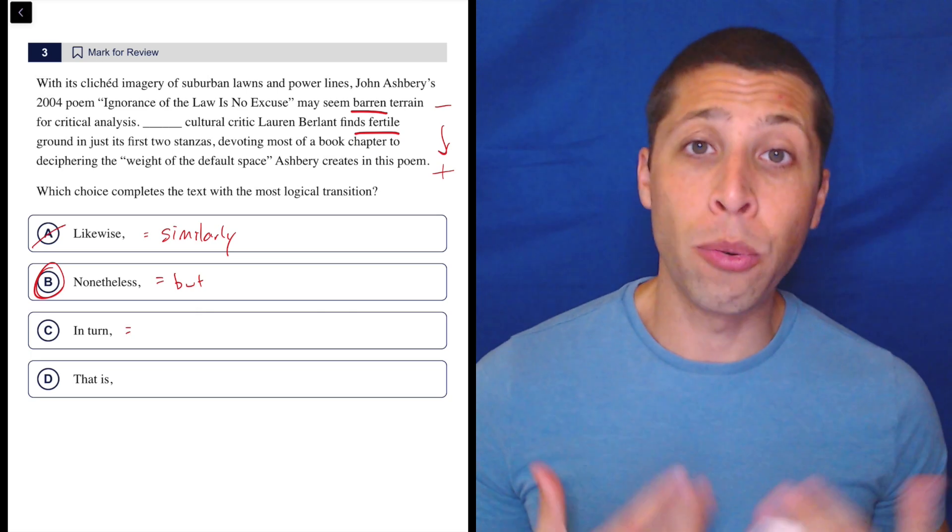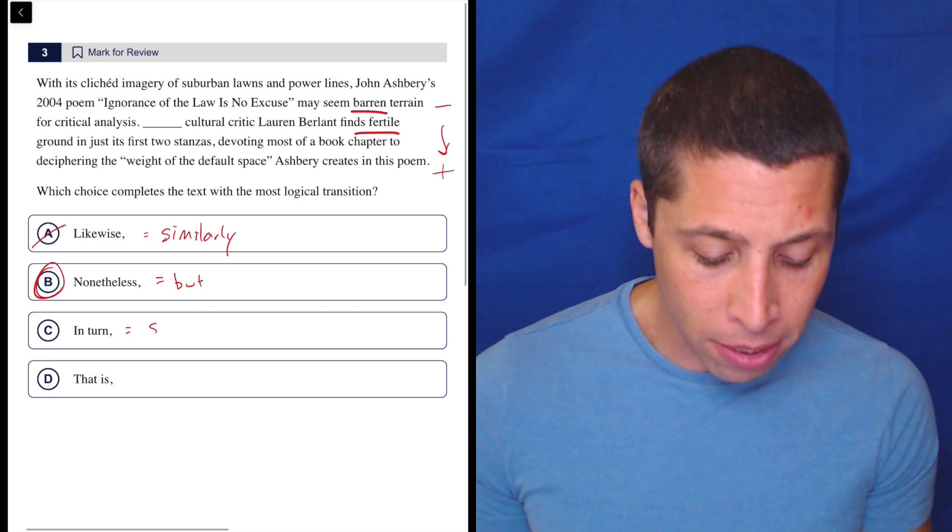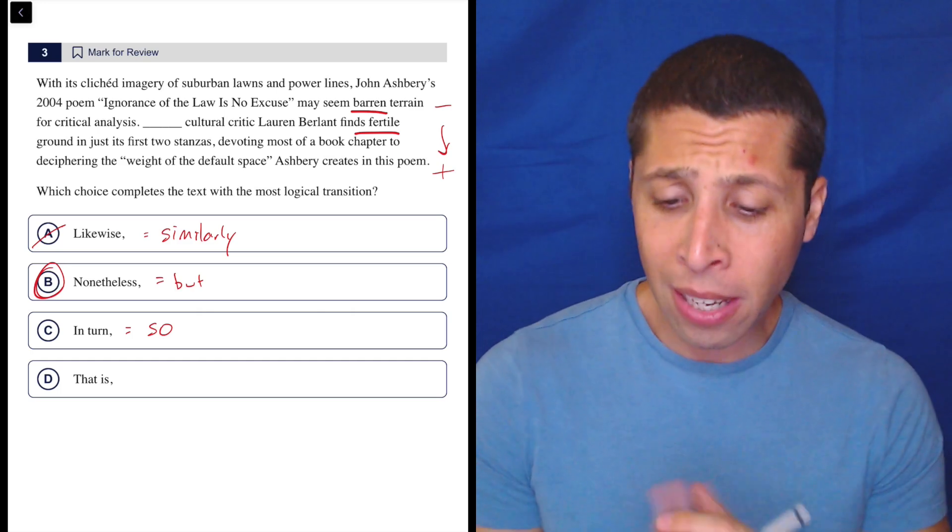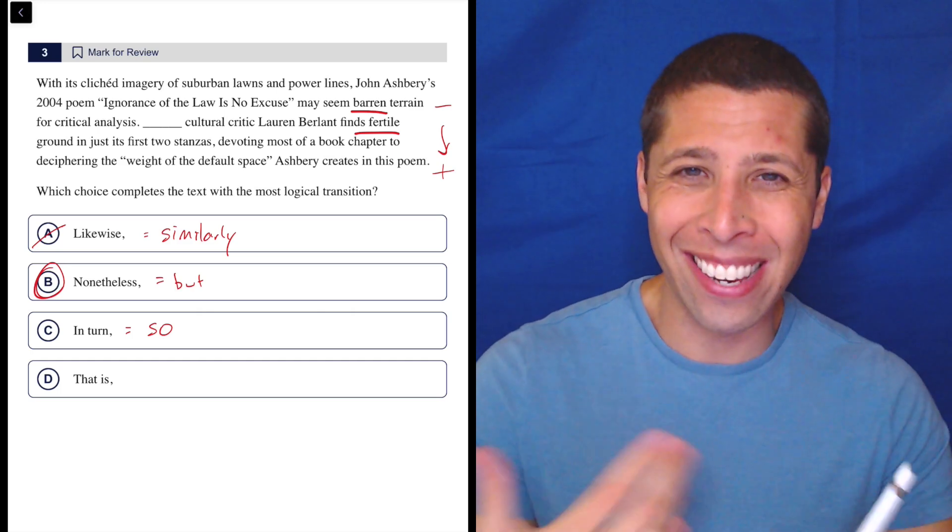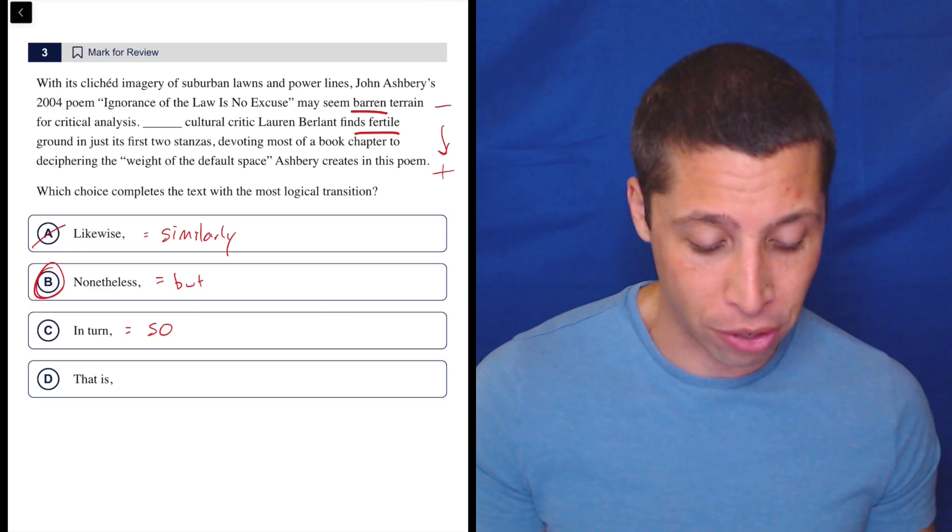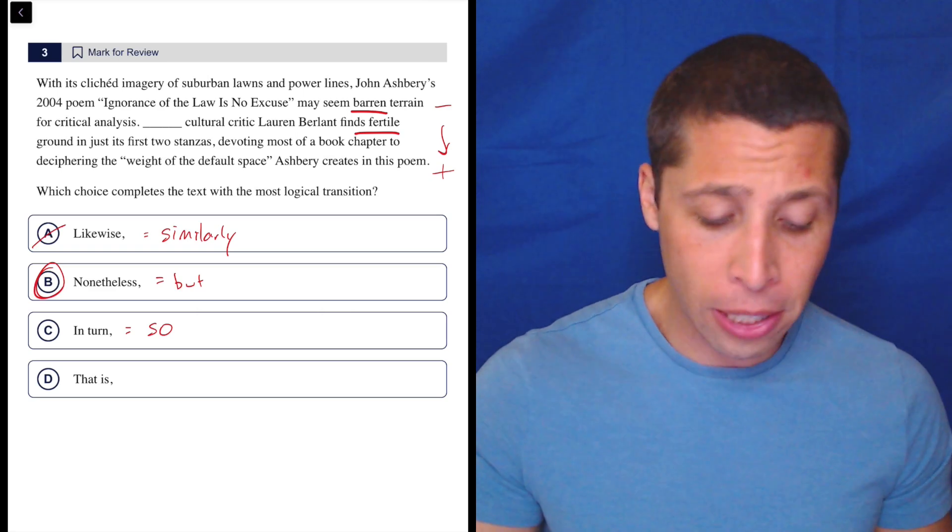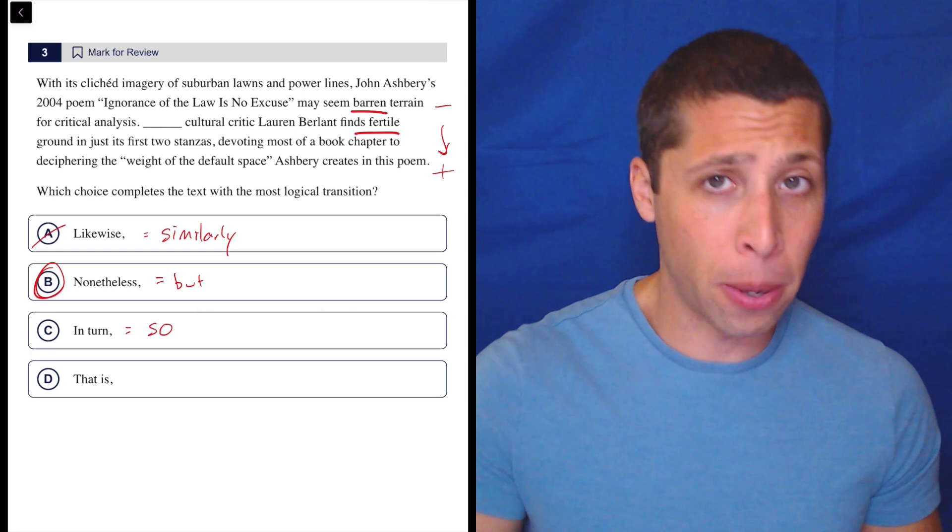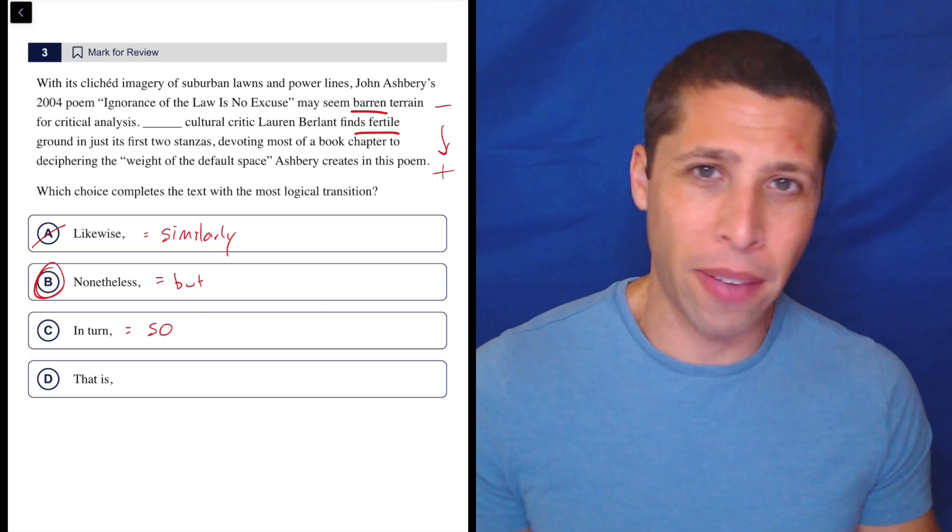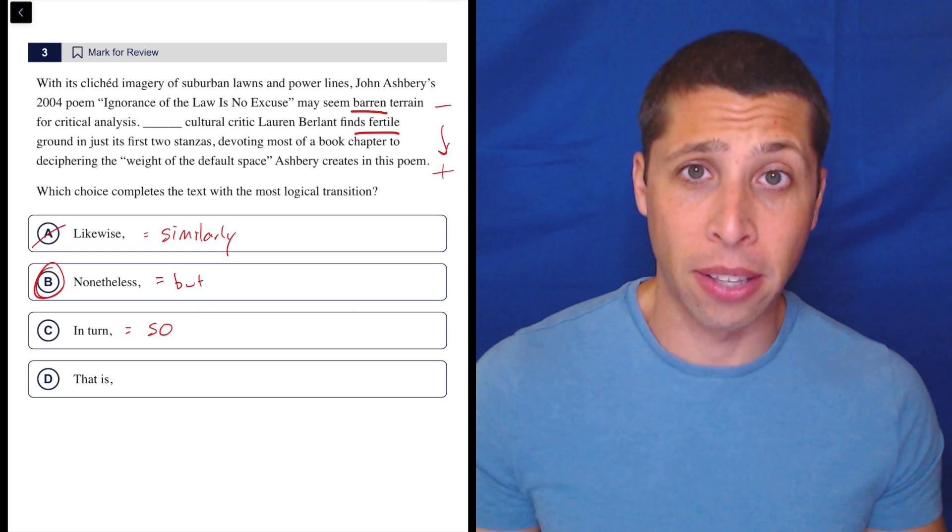In turn is one that we do not see on these questions very often, but it means so. I think that's the best way to categorize it. In turn, just kind of in this way is maybe what it means. It's kind of doing a cause and effect situation. So it doesn't make sense here because if it's a barren poem, then it wouldn't cause us to be able to pull a lot of stuff out of it and criticize it. They're saying opposite things here.